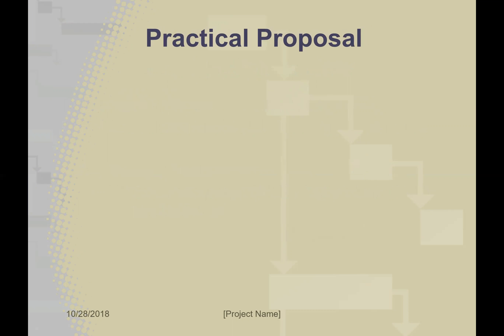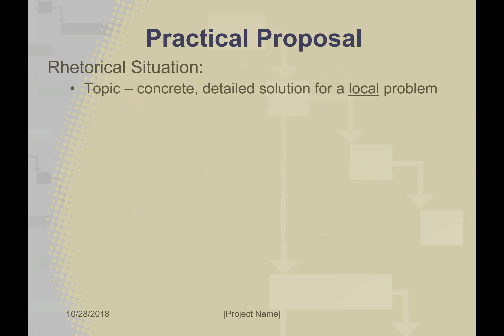The practical proposal is the written portion of the assignment. We always begin written assignments by considering our rhetorical situation, which is topic, purpose, and audience. The topic for the practical proposal is a concrete, detailed solution for a local problem. You have to consider the area that you're in — your campus, your city — and think of a particular problem that you could propose a solution for.